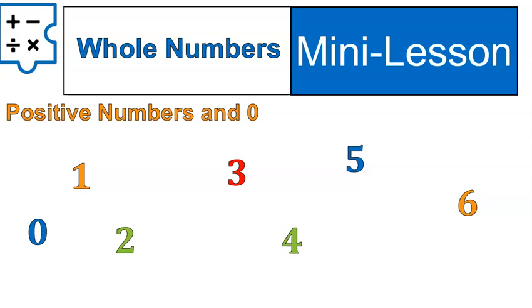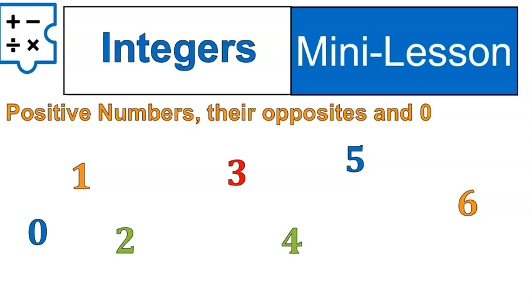Now when we go into integers, integers are positive numbers, their opposites, and zero. In other words, it can include positive numbers and their counterparts, the negative ones. Let's look at some examples.